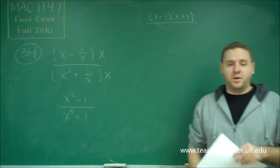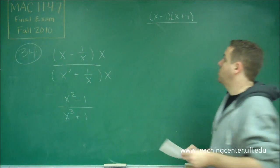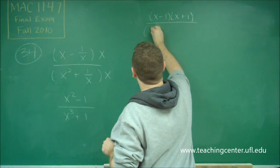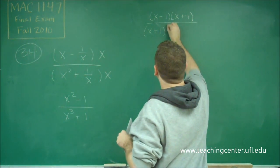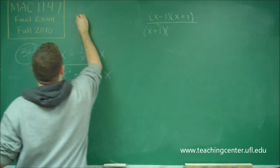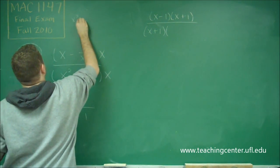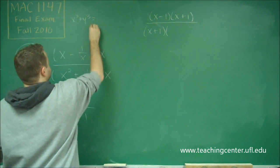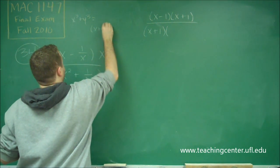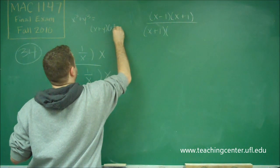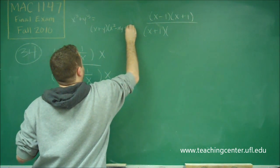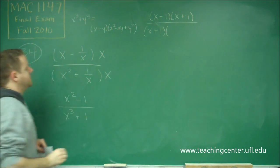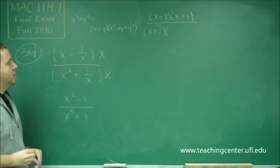Our other term, which is x cubed plus 1, we can use the sum of two cubes formula. Remember that if you have x cubed plus y cubed, your expansion for that is x plus y times x squared minus xy plus y squared.